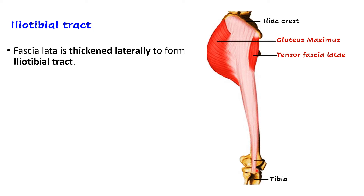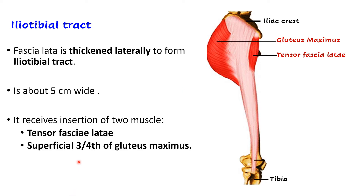The iliotibial tract is approximately 5 cm wide, especially in the upper part. It receives the insertion of two muscles: tensor fascia lata and gluteus maximus — not the whole of gluteus maximus, but its superficial three-fourths. The deeper one-fourth is excluded. So the two muscles inserted into the iliotibial tract are tensor fascia lata and the superficial three-fourths of gluteus maximus.